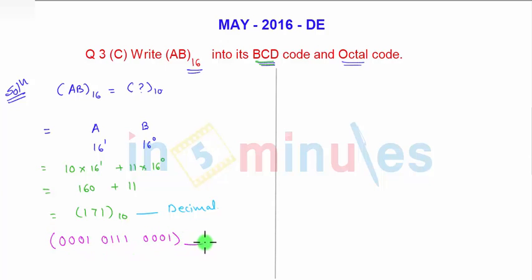So this is the final BCD code for 171 decimal. So this is our final answer.